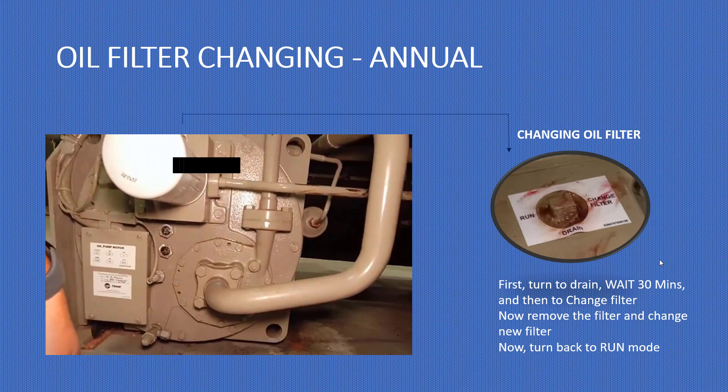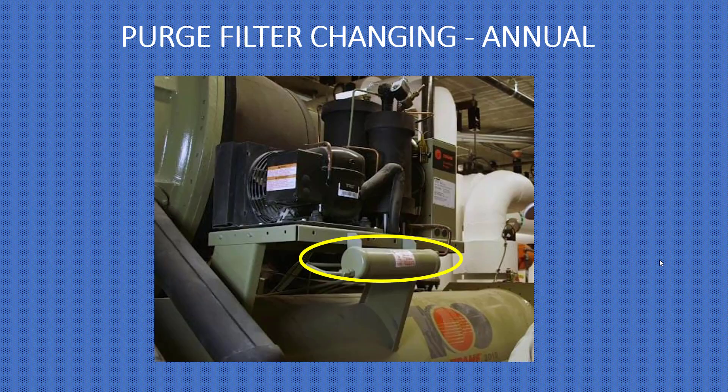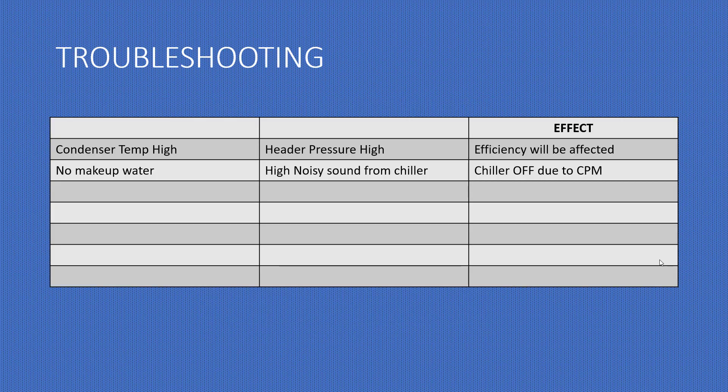Oil filter changing is done annually: first turn to drain, wait 30 minutes, then remove the filter and install a new filter, and turn back to run mode. Purge filter changing is also done annually.